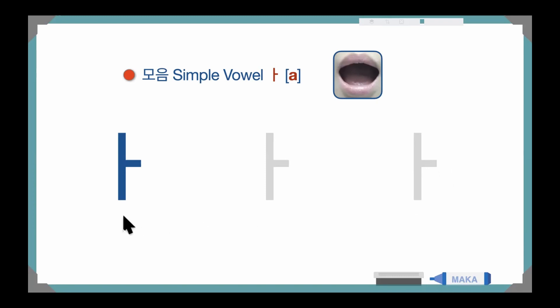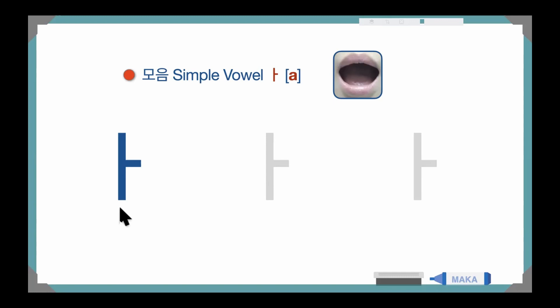This is 'a', 'a', 'a' — like this English pronunciation. Please open your mouth like this picture. Maybe this picture will help you to understand how to pronounce 'a'. Please repeat after me one more time: 'a', 'a', 'a'. And now let's practice how to write 'a'.